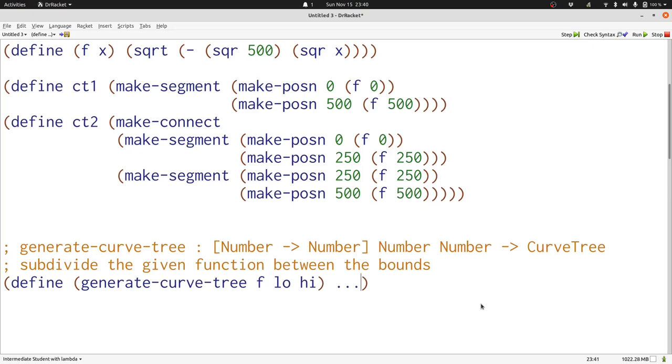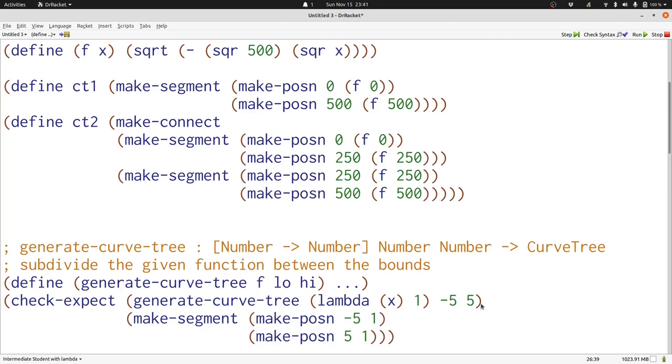Let's write a couple examples. We want to generate the curve tree for the function that always produces one between the bounds of minus five and five. We're just going to get a single segment that connects the point minus five one with the point positive five one.